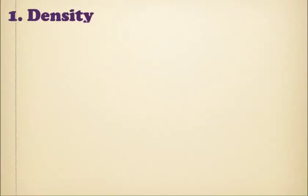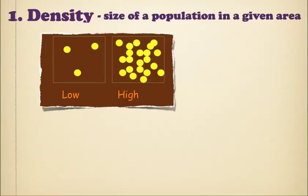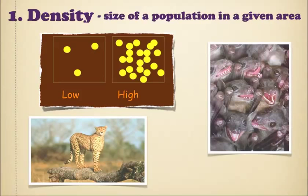Density is how packed they are, how many organisms are in a given area. They could have low density or high density. The cheetah would be low density, there's only a few cheetahs in many square miles. Or bats in a cave are crazy packed.